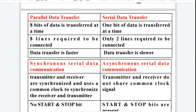There are two types of data transfer. One is parallel data transfer, another is serial data transfer. In parallel data transfer, 8 bits of data is transferred at a time. In serial data transfer, 1 bit of data is transferred at a time.